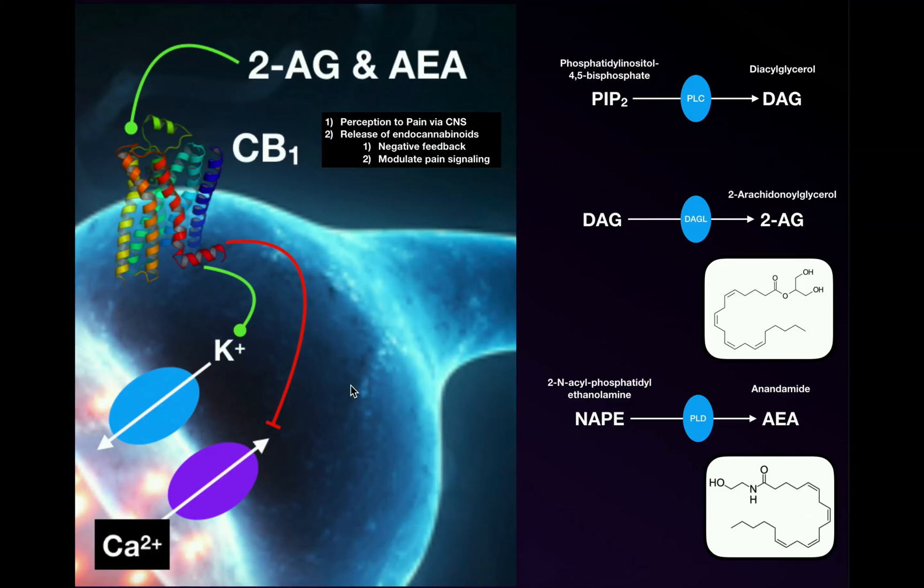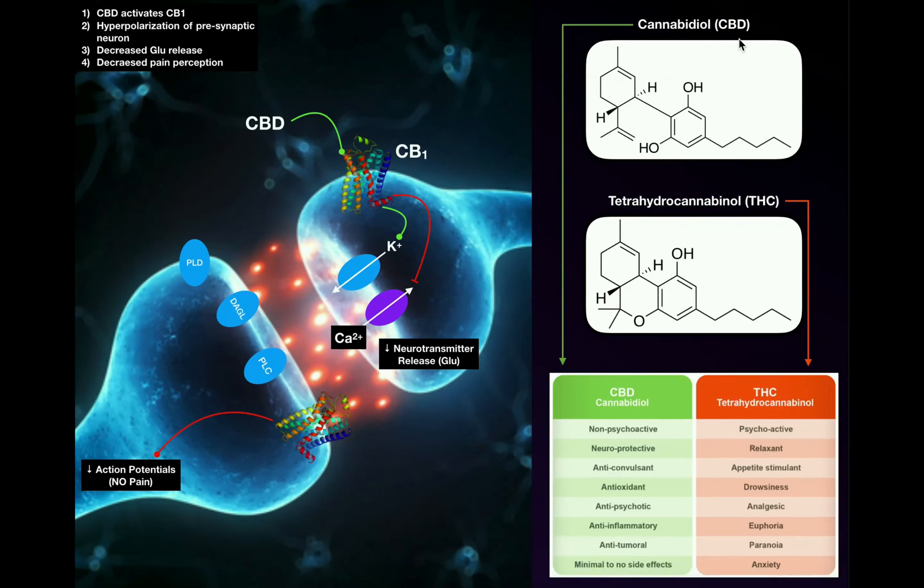We can actually use the cannabinoid receptor, the CB1 receptor, as a therapeutic target in order to reduce pain. This is precisely what CBD is used for. We have two exocannabinoids not biosynthesized by your body. These are actually made in plants, such as the marijuana plant. Marijuana has two major exocannabinoids. One is the psychoactive form, tetrahydrocannabinol or delta-9 tetrahydrocannabinol, abbreviated THC.